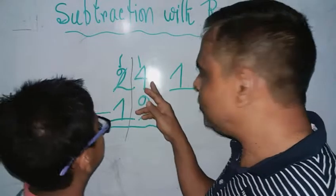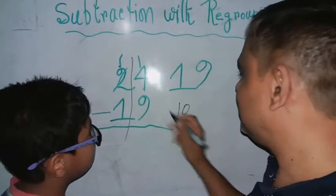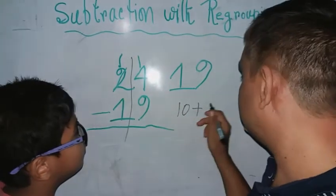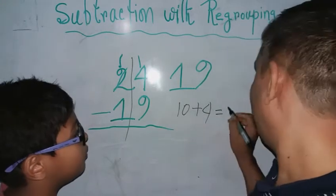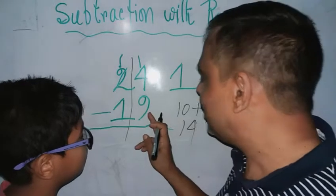And it is going with the ones place. So that's it, one ten means 10, right? And four ones, so total 14. Well done! So 14, so it is so easy to take away 9 from 14, right? So 14 minus 9, what? 5.